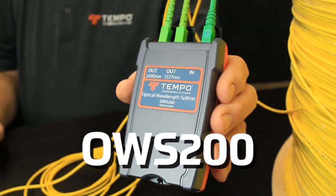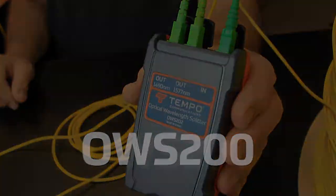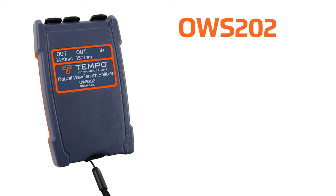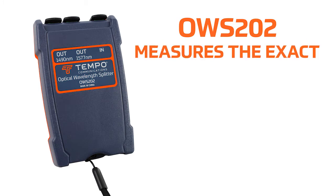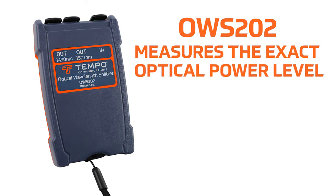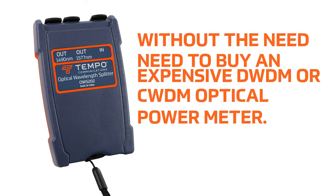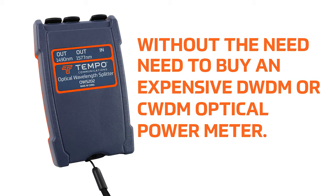The Tempo Communications OWS200 is a passive device that enables the technician to measure individual wavelengths typically found in GPON2 networks. For example, the OWS202 is capable of measuring the exact optical power level of 1490 nanometer and 1577 nanometer wavelengths without the need to buy an expensive DWDM or CWDM optical power meter.